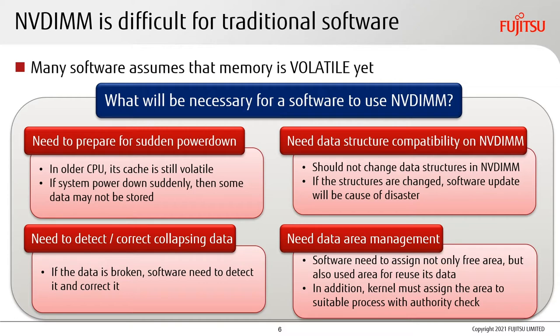Next, it needs data structure compatibility on NVDIMM — the data structures should not change. If structures are changed, a software update could cause disaster. Third, it needs to detect and correct corrupted data. If data is broken, software needs to detect and correct it. Finally, it needs data area management — software needs to manage not only free areas but also used areas for reuse. The kernel must also assign areas to the appropriate process with authority checks.